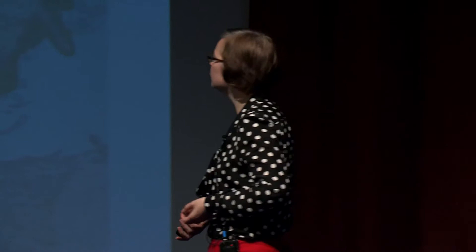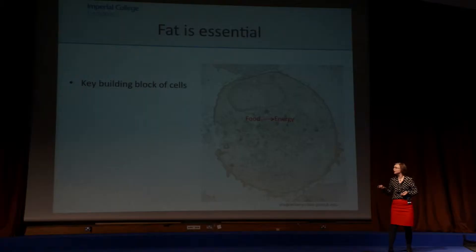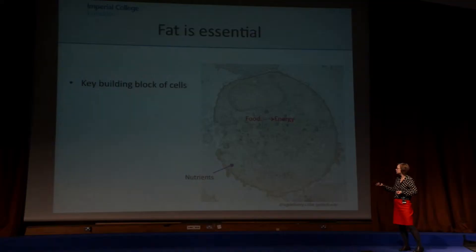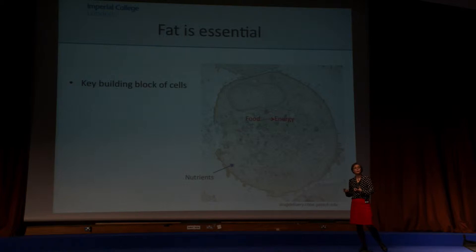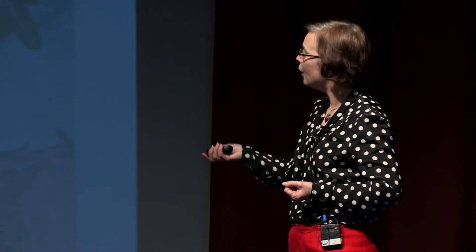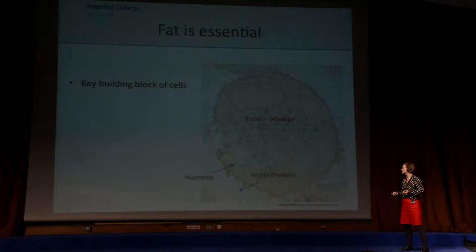But the fact that you have what is essentially a waterproof barrier structure surrounding the cell means that we have to have some mechanism by which we can get important raw materials into the cell to provide the source for these reactions. So we need a mechanism by which we can take up nutrients into the cell, and we also need a mechanism by which we can remove waste products from the cell for disposal.